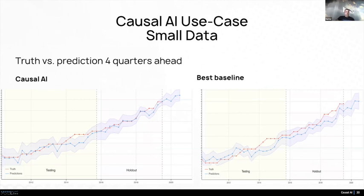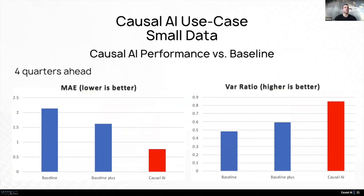Here is another example of why you should care about causal AI: it performs better even when you have a handful of data points. This is an example with only four data points a year. We can see how well it performs compared to the current state of the art — essentially more than two times better in terms of error rates.